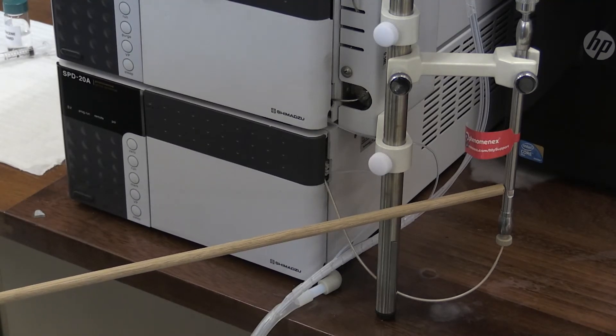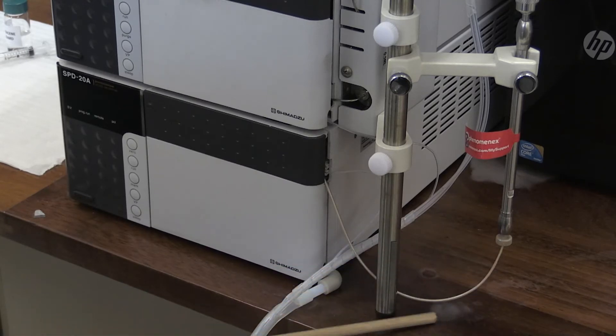When the compounds leave the column, they travel to the detector. There are many types of detectors available. In this experiment, we are using a UV-Vis detector, which is a detector that measures the absorbance of each compound as they elute from the column.